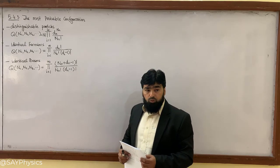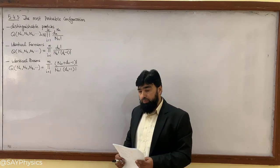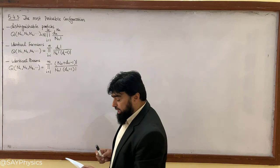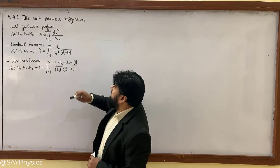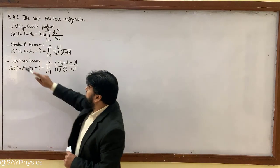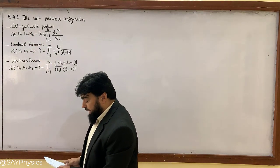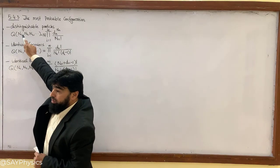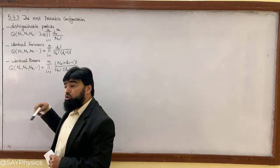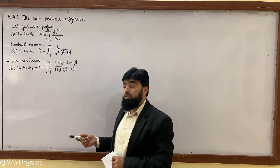The three situations are: distinguishable particles, which is the classical case, and identical fermions and identical bosons, which are quantum mechanical cases. In thermal equilibrium, every state with energy E and number of particles N is equally probable. Under this situation we have some configuration Q in terms of N1, N2, and so on, and we will maximize this — because the maximum configuration is the most probable one.